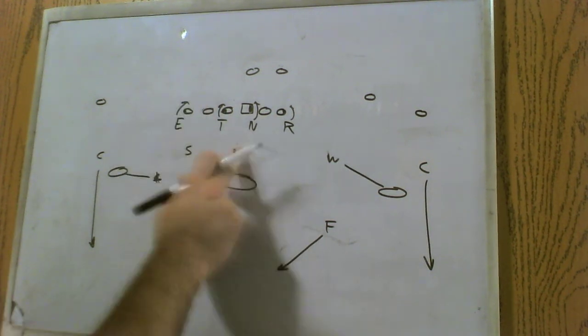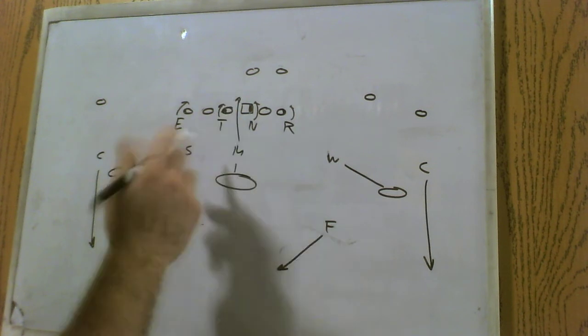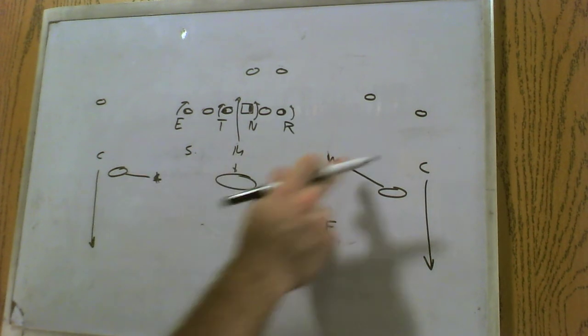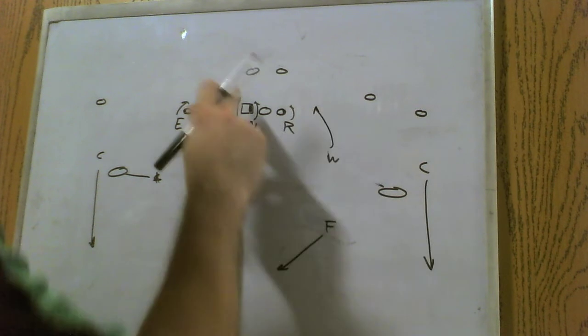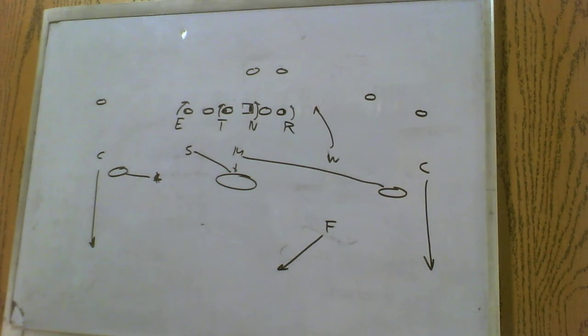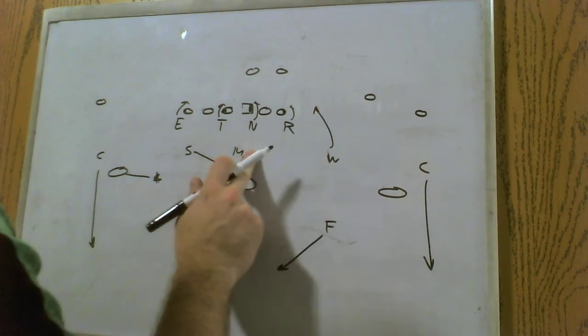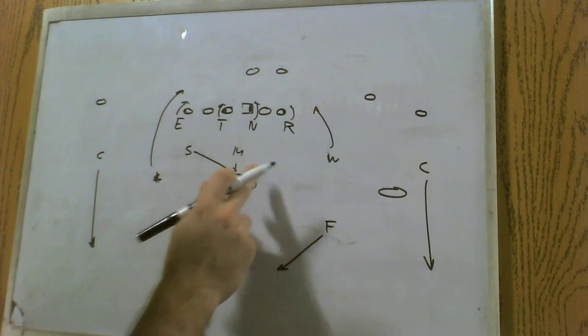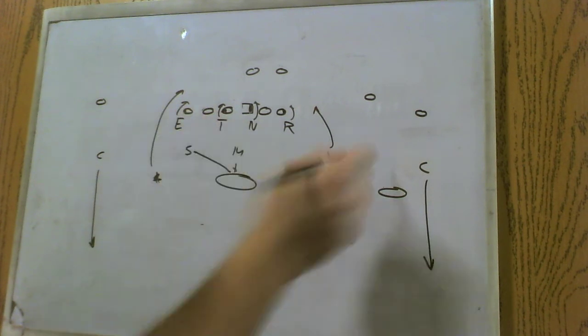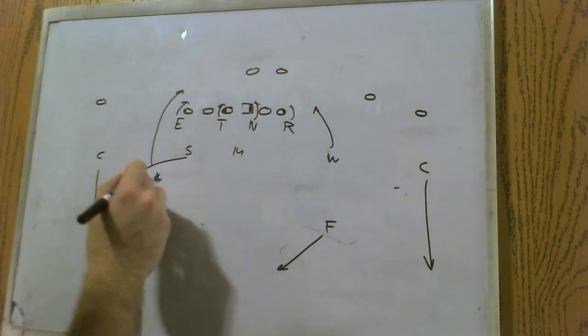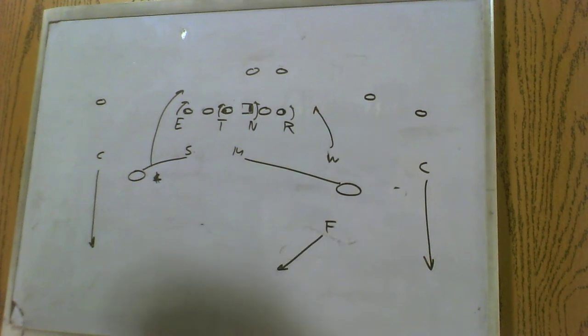Maybe they want to bring the Mike, send him on a blitz. So, now the Sam drops to the middle. Maybe they want to bring the will. Now, the Sam drops to the middle and the Mike has got to move his butt and get all the way out there. Maybe they want to bring, let's say, the strong safety. So, now we have one, two, three, four, five, six defenders. So, now we're reduced to two underneath. Again, just the Mike and Sam. So, he's going to drop to the hash. He's going to drop to the hash. Because, again, if there's two underneath, they're going to drop to the hash marks. And they just play football.